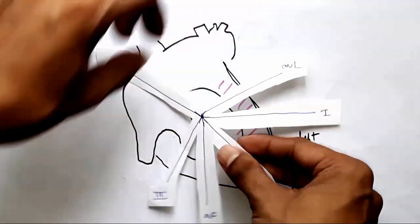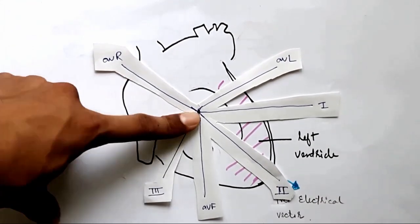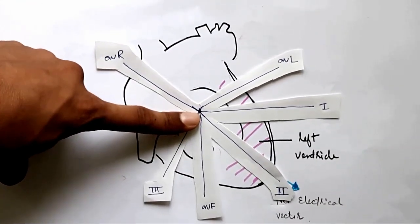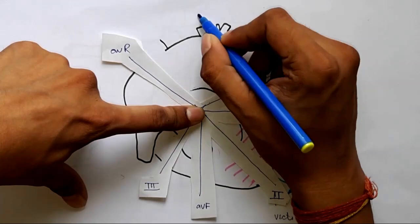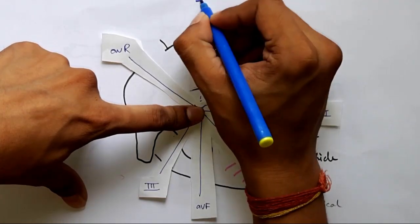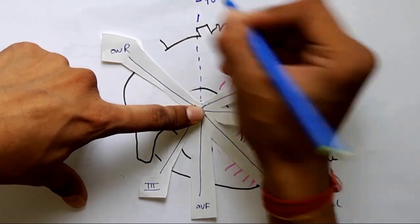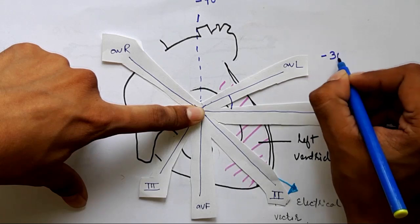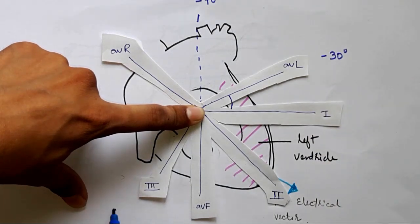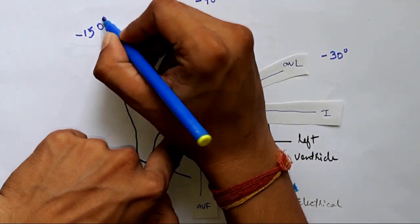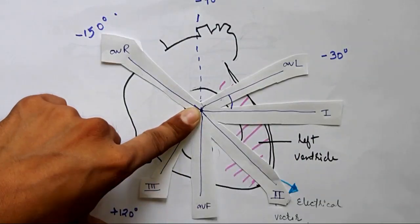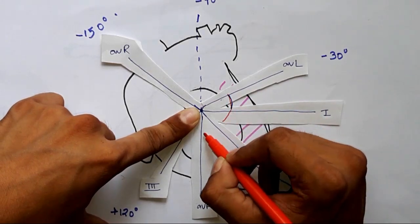I have cut out this diagram and placed it onto the anatomy of the heart to make it simpler. Extending the AVF gives minus 90 degrees; AVL is at minus 30 degrees; lead three is at plus 120 degrees; and AVR is at minus 150 degrees.